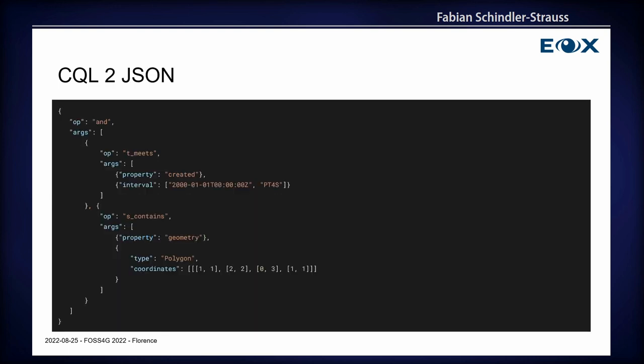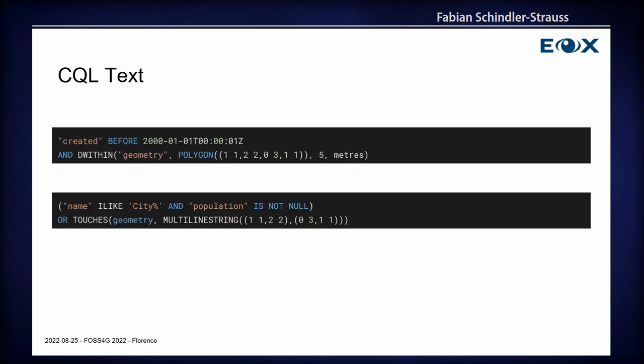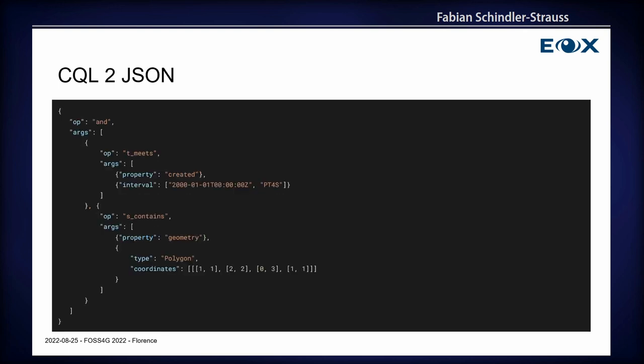There's also now CQL2 JSON, which is the same filters that we have seen in the earlier one. Basically, the same semantics behind it are now expressed in JSON. You can do the same things — you can do geospatial queries, temporal queries, combine them with AND and OR and so on. So you have the same functionality as before, but encoded in a different standard.